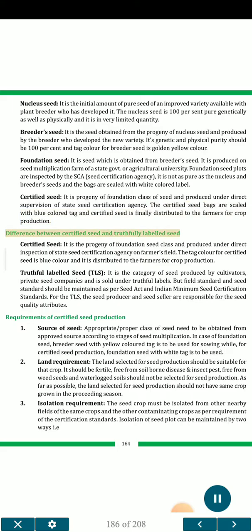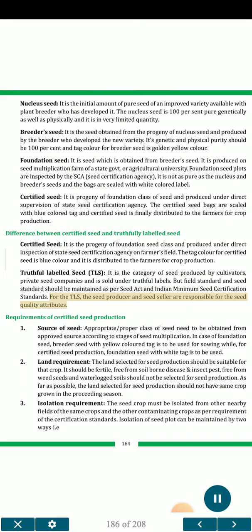Difference between certified seed and truthfully labelled seed (TLS). Certified seed is the progeny of foundation seed class, produced under direct inspection of the state seed certification agency on farmers' fields; the tag colour is blue and it is distributed to farmers for crop production. Truthfully labelled seed (TLS) is the category of seed produced by cultivators and private seed companies and sold under truthful labels, but field standards and seed standards must be maintained as per the Seed Act and Indian Minimum Seed Certification Standards. For TLS, the seed producer and seed seller are responsible for the seed quality attributes.